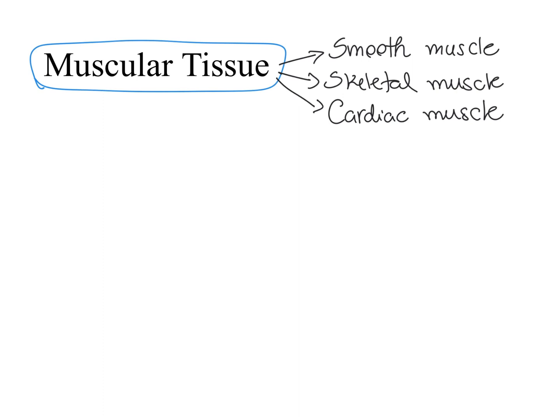When we look at these three different types of muscles under a light microscope, we can see that they are different — they look different. So we have a structural difference between these three different types of muscles. Also the way these three different types of muscles work is slightly different, and I will go over the main differences between smooth muscle, skeletal muscle, and cardiac muscle in this lecture.